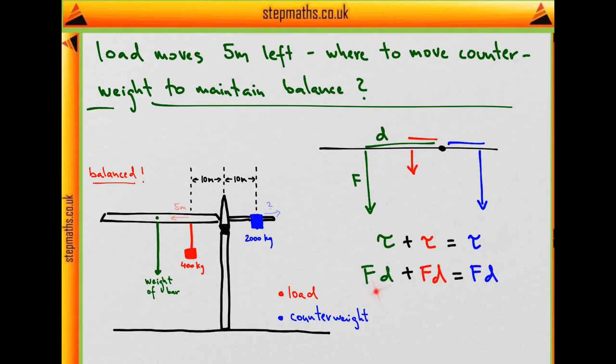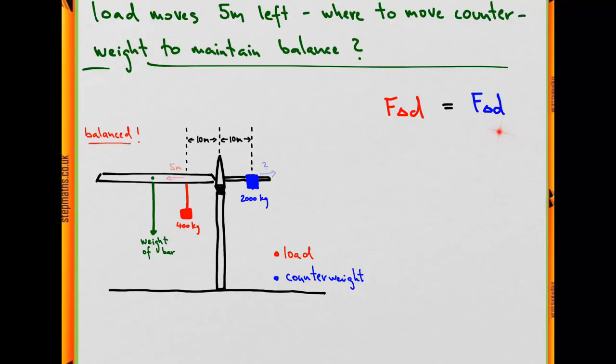Torque is just force times distance, provided the force is perpendicular to the distance, which it is in our case. When we decide to move one of our weights by distance delta d, this is going to add a term to the torque on the right-hand side, F times delta d. The same applies for the other side, new contribution F delta d. In order for this equation to still be balanced, to still hold true, the red and the blue contributions need to be the same. That gives us a new condition we can work with.